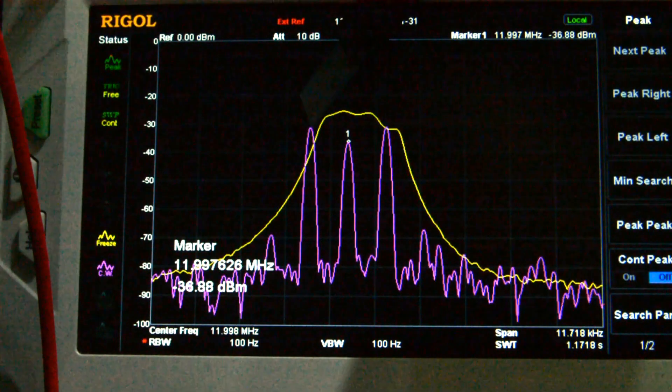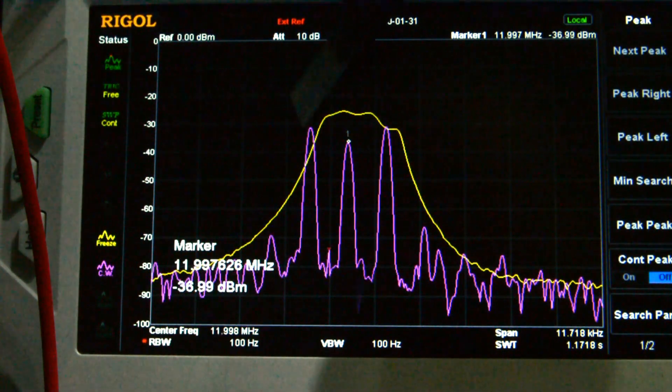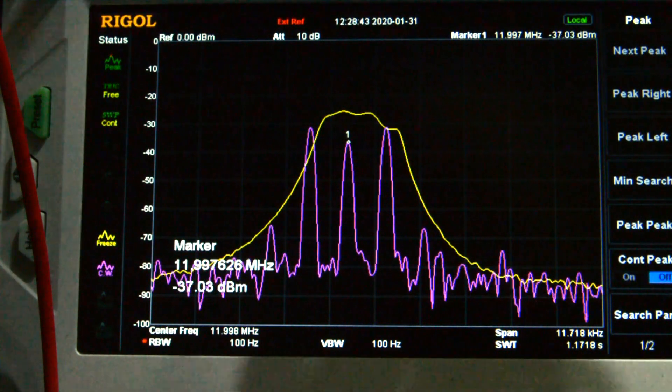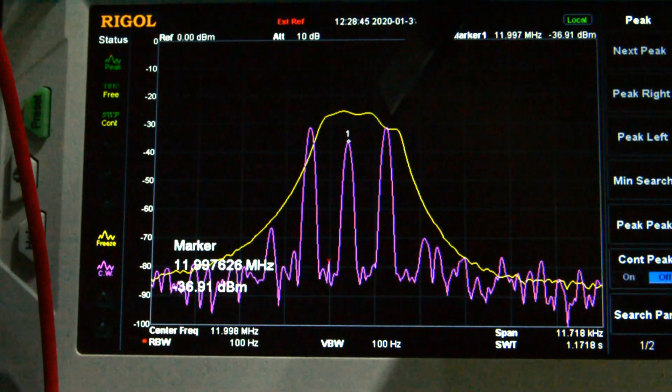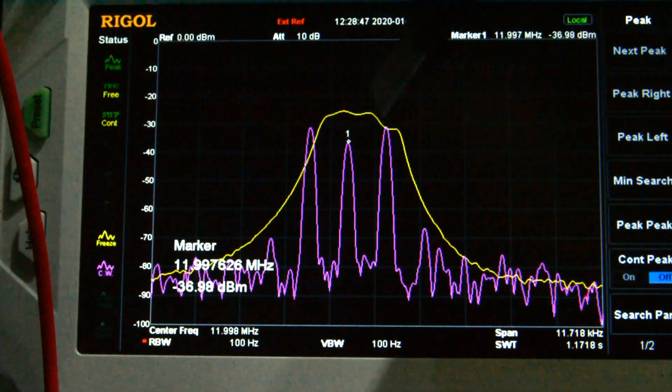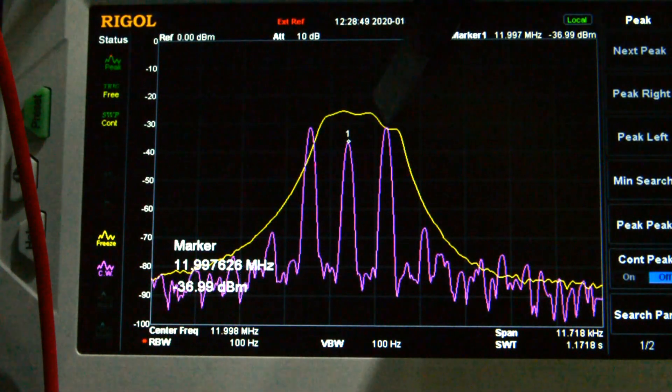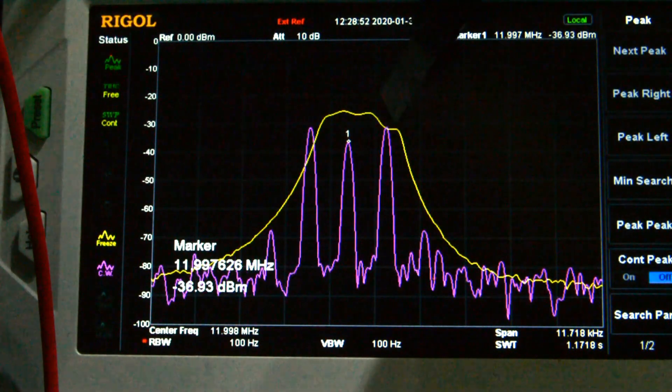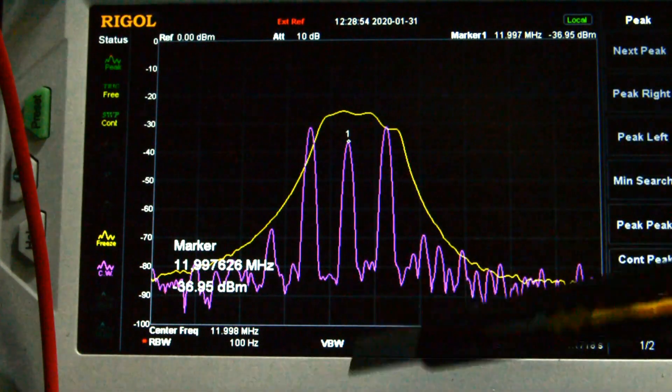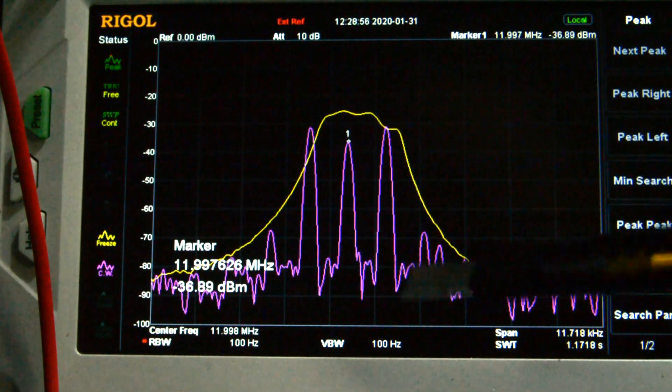This peak here is our carrier minus the audio frequency, so this is one kilohertz down in frequency. This here is the audio frequency plus the carrier, so this is one kilohertz up in frequency. What we've basically got here is a carrier and two sidebands.